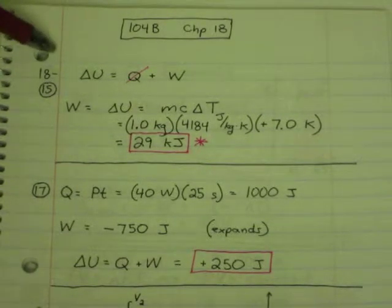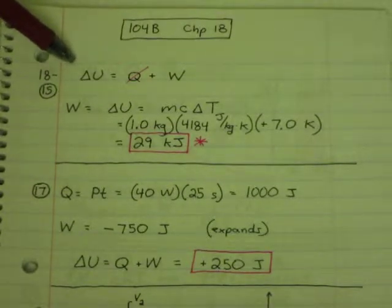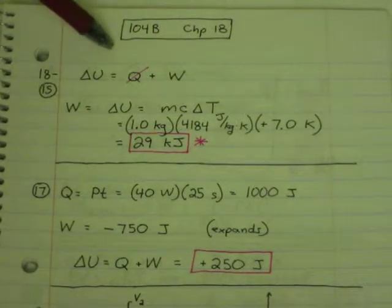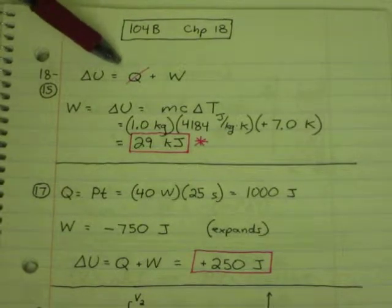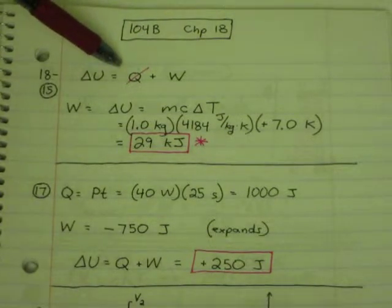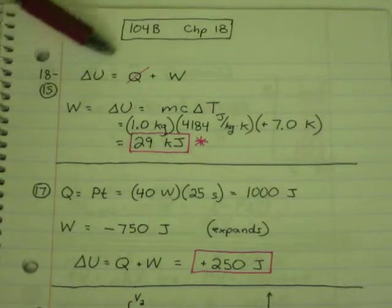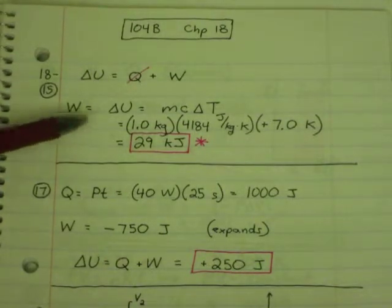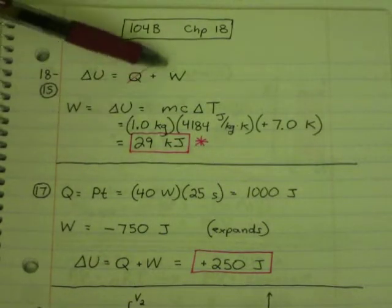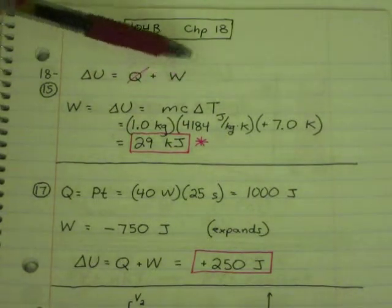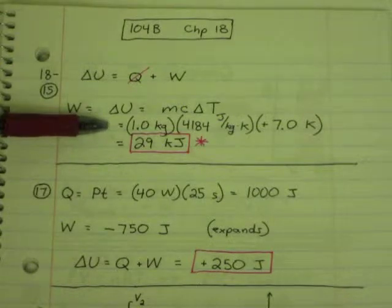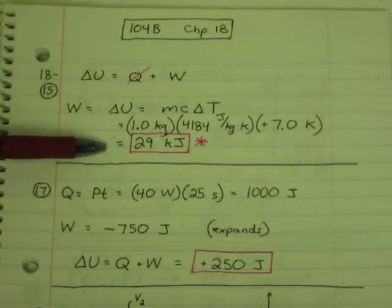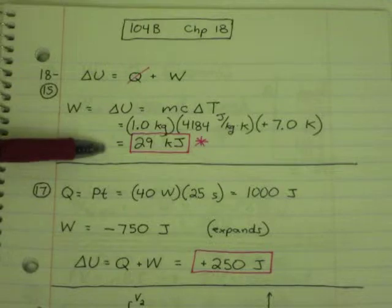We'll start with the first law of thermodynamics. Change in internal energy equals heat added plus work, but there is no heat added in this problem. So change in internal energy is equal to work. Work equals change in internal energy, which is mc∆T. You have your mass, specific heat of water, times change in temperature, and the answer should be 29,000 joules.